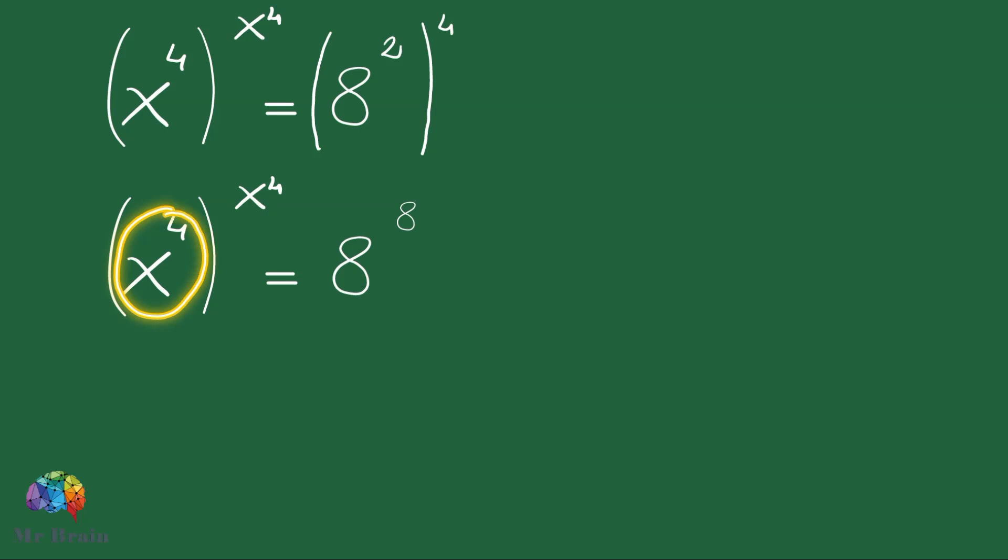We observe that on the left-hand side we have an exponential number whose base is x to the fourth and whose exponent is x to the fourth. On the right-hand side instead we have an exponential number in which the base is 8 and the exponent is 8. It can be deduced that x to the fourth is equal to 8.